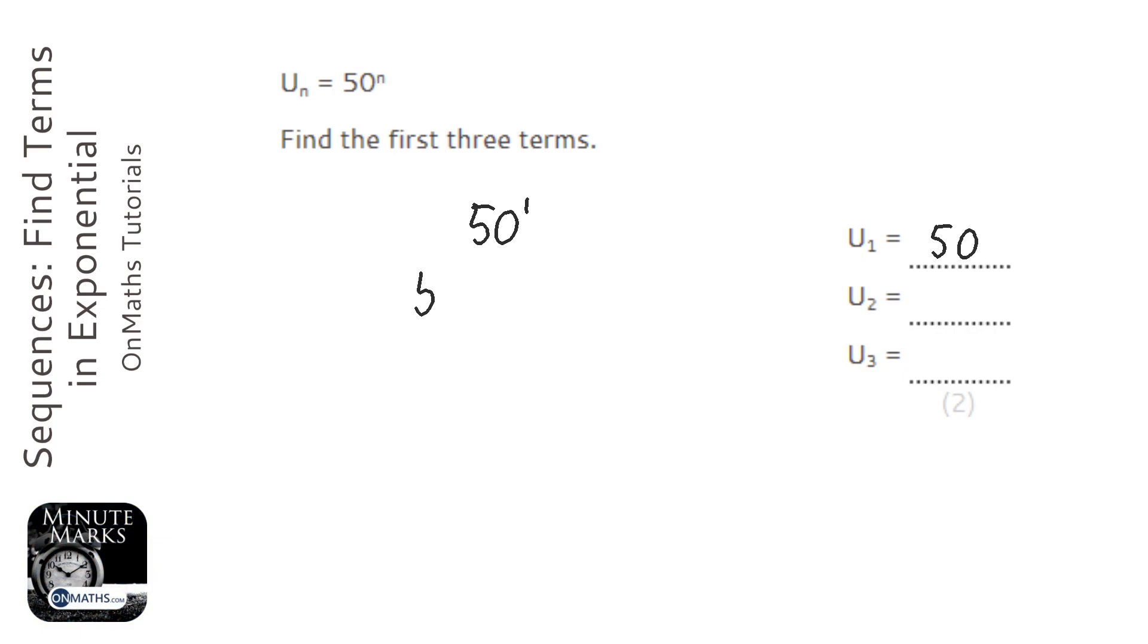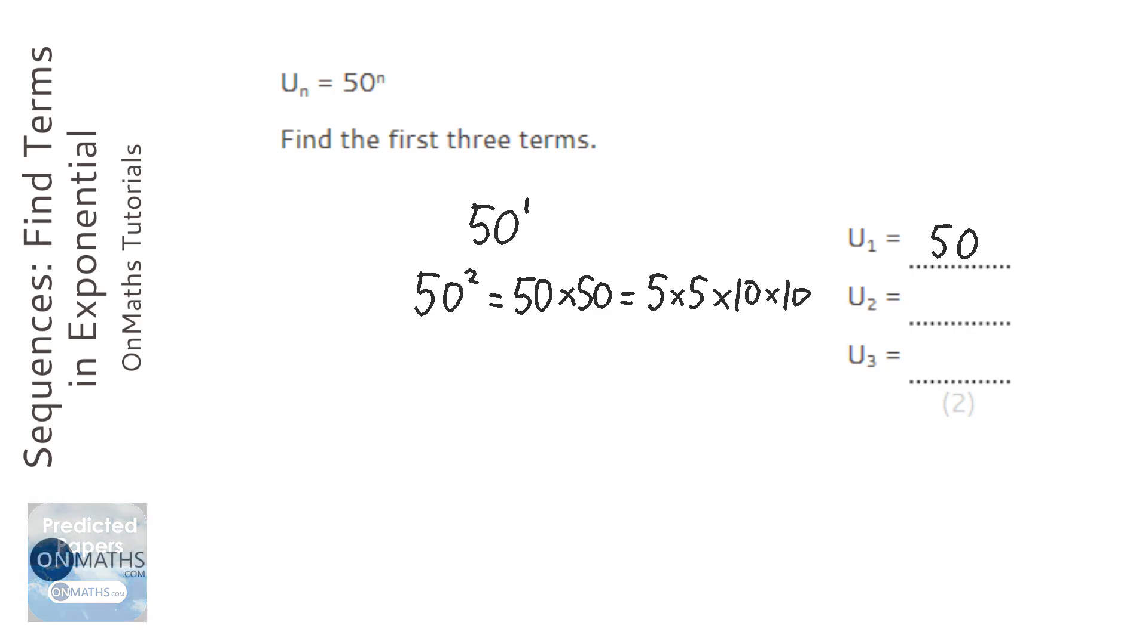For the second term, n is going to be 2, and that's going to be 50 times 50. And I like to just do 5 times 5 times 10 times 10, which is 50 is 5 times 10. I've just reordered the 5s next to each other and 10s next to each other. 5 times 5 is 25, and 10 times 10 is 100, so that's going to be 2,500.